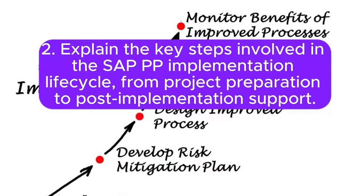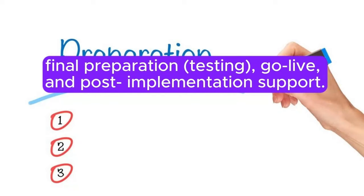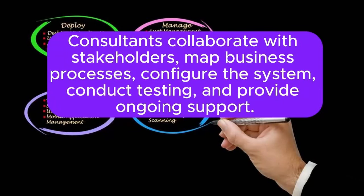Question 2: Explain the key steps involved in the SAP PP implementation lifecycle, from project preparation to post-implementation support. The implementation lifecycle includes project preparation, business blueprinting, realization and configuration, final preparation and testing, go-live, and post-implementation support. Consultants collaborate with stakeholders, map business processes, configure the system, conduct testing, and provide ongoing support.